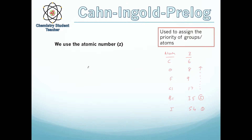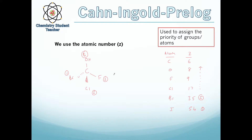For a quick example: we have a carbon with four atoms bound to it — an OH group, a fluorine, a chlorine, and a bromine. We look at the atomic number. Bromine has 35, so it has the highest priority. Chlorine, with 17, has the second highest priority. Fluorine, with 9, has the third highest priority. And oxygen, with 8, has the lowest priority. That's how we assign priorities using the Kahn-Ingold-Prelog system.